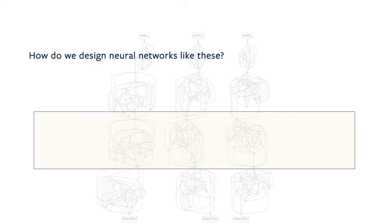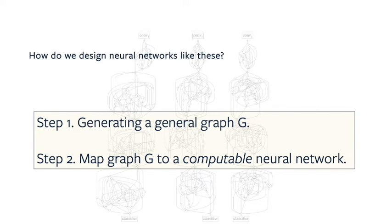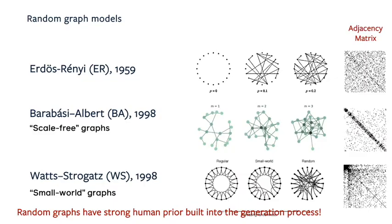So how do we design these neural networks? The process mainly takes two steps. The first is we generate a general graph, and the second step is we map it to a computable neural network. There are different ways to generate a general graph. To remove any bias, we use three classical random graph models: the ER, BA, and WS models, which have very different priors and properties. I highly recommend you check out their Wikipedia pages — they are all Nature and Science papers published in the 1990s and are extremely interesting in terms of different application scenarios.